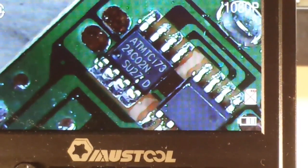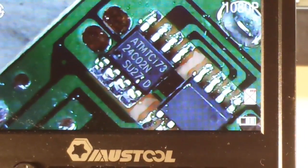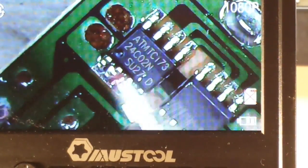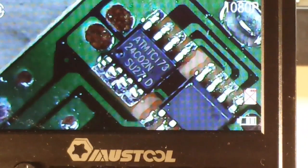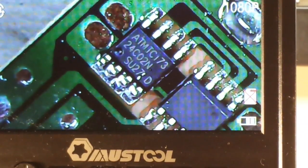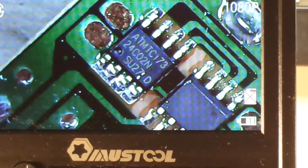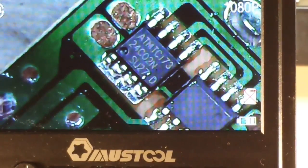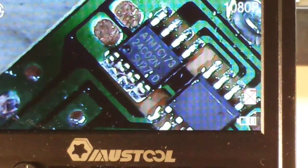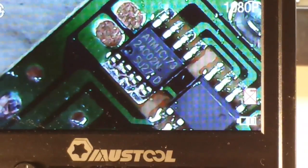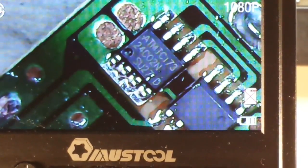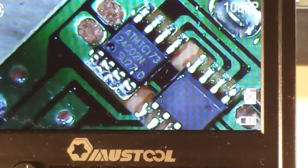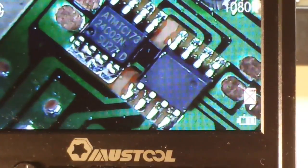If we take a look at our ICs, we'll start with this one here on the left since it's the only one that's really labeled. We get ATM TC 173 and underneath, a 24C02N. And that, my friends, is an Atmel two-wire serial EPROM. So that is where the programming is hidden for all the blinkies and stuff that we have going on.